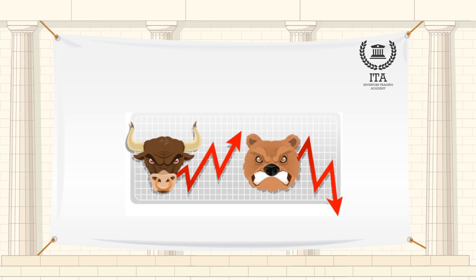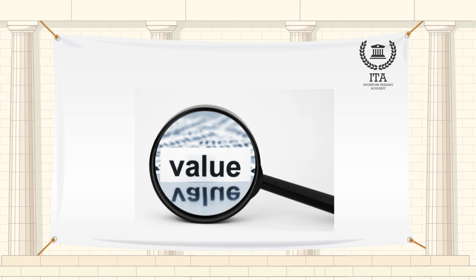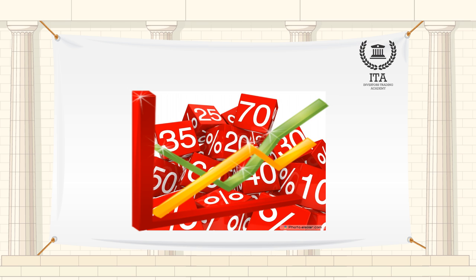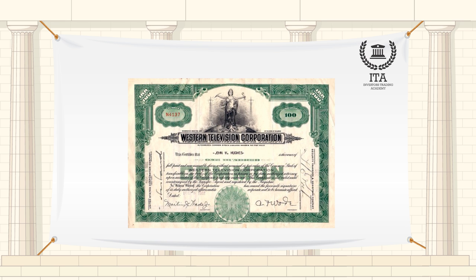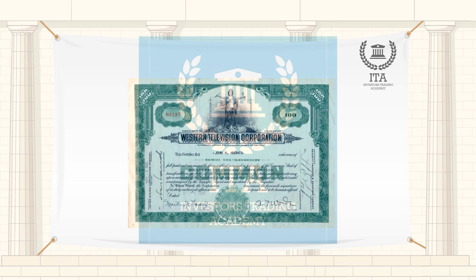it typically trades at a discount to its par value. In other words, investors usually purchase commercial paper below par and then receive its face value at maturity. The discount, or the difference between the purchase price and the face value of the note, is the interest received on the investment. All commercial paper interest rates are quoted on a discounted basis.